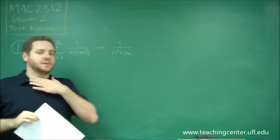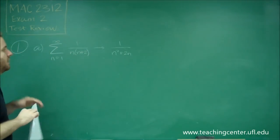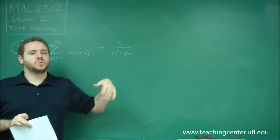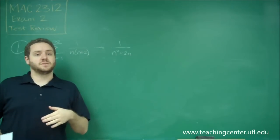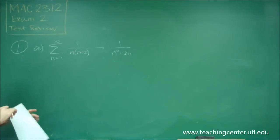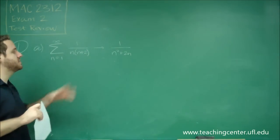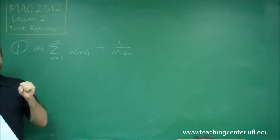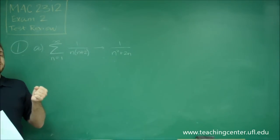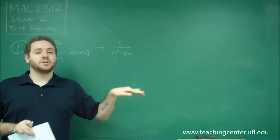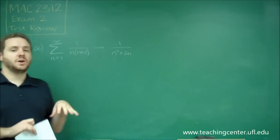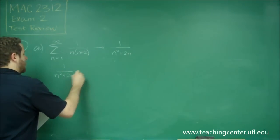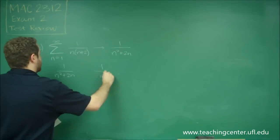That's easily shown to converge by comparison test. You should kind of have in your mind already, this kind of looks like a p-series, so chances are comparison to a p-series is going to be the easiest way to do it. So remember that if we think something converges, to show it converges by comparison test, you need to find a convergent series that is larger than it. In other words, this has to be smaller than some convergent series you know. The easiest one in this case would be the series 1 over n squared.